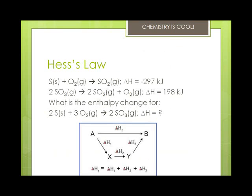Hess's law of heat summation states that for chemical equations that can be written as the sum of two or more steps, the enthalpy change for the overall equation is the sum of the enthalpy changes for the individual steps — in other words, you just add the delta H's. Looking at the example: 2S plus 3O2 gives you 2SO3. The bottom equation is the same as two of the steps above, so you multiply the first equation's delta H by 2 because you need 2S's and 3O2's, and then add them together.